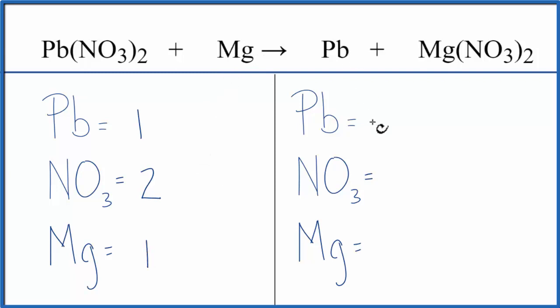Magnesium, we have 1. Lead, 1. 1 nitrate times 2, so there's 2 of those NO3s. And magnesium, we have just 1.